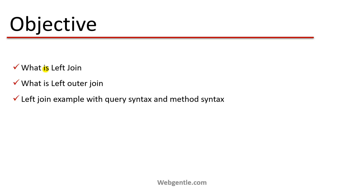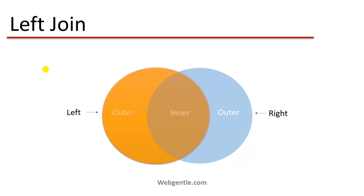In a left join, we have two data sources — one on the left side and one on the right side. There may be some data which is common in both. If you are performing a left join, all records from the left data source will be part of the output. If related data exists on the right side, it is also included; if not, we get null.